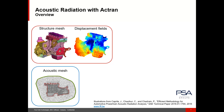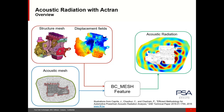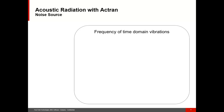This acoustic mesh can be created automatically within Actron's preprocessor, Actron VI. These two ingredients are then used in a BC mesh boundary condition, which is the dedicated feature of Actron for acoustic radiation, allowing you to get acoustic radiation results. The acoustic radiation calculation requires vibrations in time domain or frequency domain, since Actron can solve acoustic radiation in both.